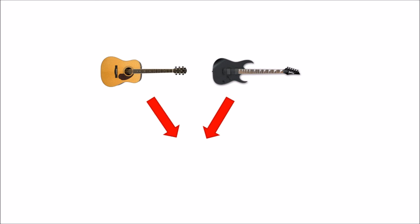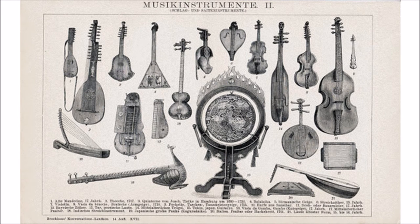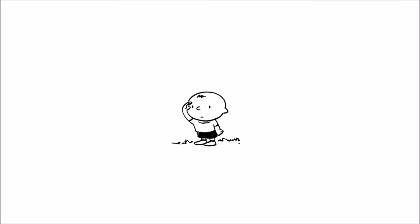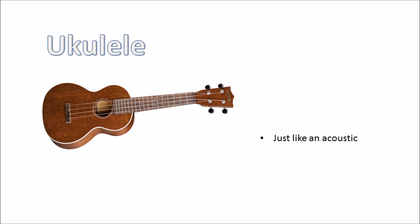And that's it - guitars in a nutshell. But how do other stringed instruments differ? Excellent question. Let's look at some of the other main instruments. Ukuleles are just like an acoustic guitar, but the tuning is different - and I mean way different.